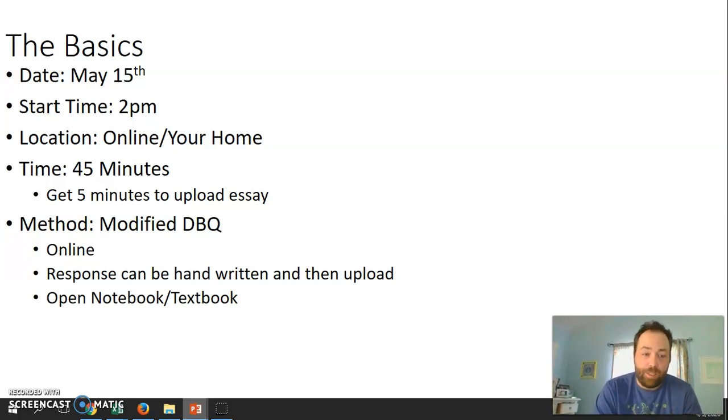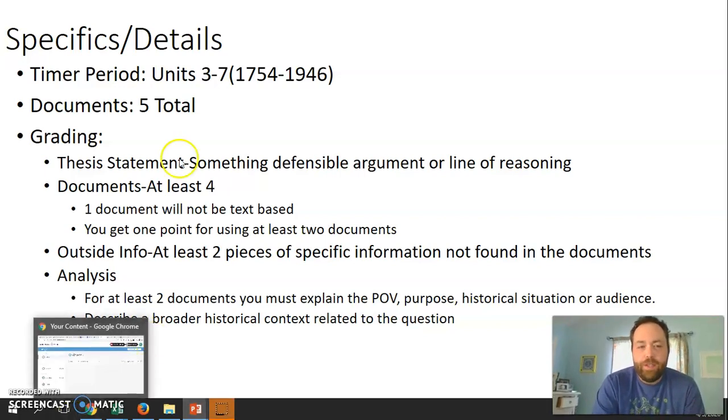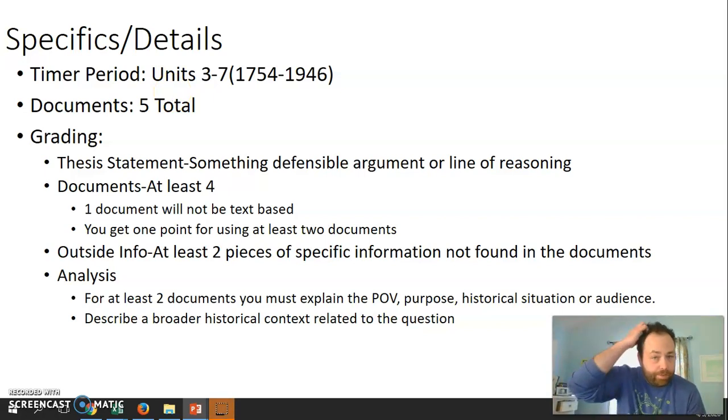Now let's talk about more specifics about this DBQ. I'm a little confused on the time frame. The DBQ traditionally was anywhere from units 3 through 8. We obviously didn't get units 8 and 9. The initial release on the modified exam was going to be covering units 1 through 7, but now they're doing a DBQ and it appears they're even cutting off units 1 and 2. So 1754 is the end of the French and Indian War. Basically we're talking French and Indian War all the way up to the end of World War II. That's still a lot to cover but that is actually really helpful. It narrows it down to some very specific time periods.